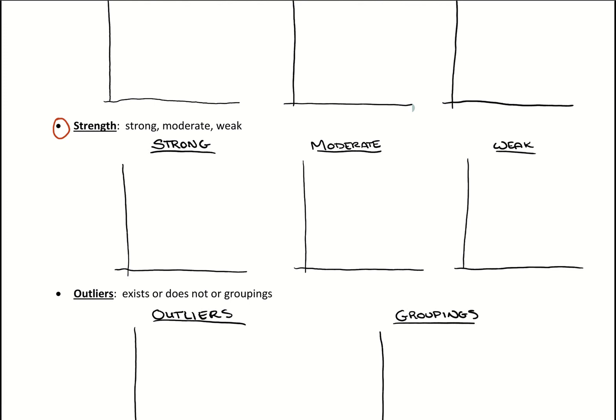And then our last one is looking for these cases that are special, like if there's an outlier or if there are special groupings, because we want to avoid these descriptions if we have those as part of our graph.